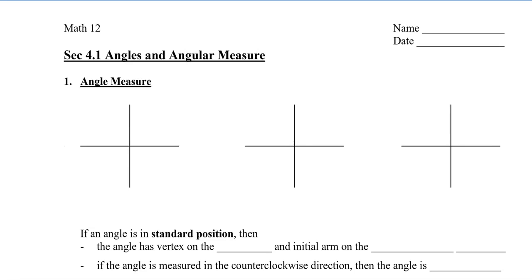In this video, we're going to take a look at angles and how they are measured. Angles are usually measured in standard position. This means that the angle has a vertex on the origin and the initial arm on the positive x-axis.